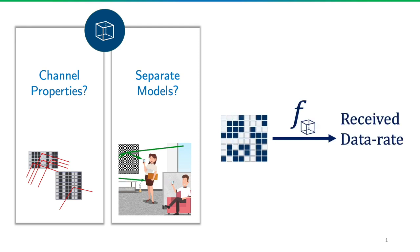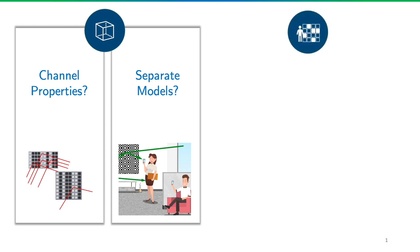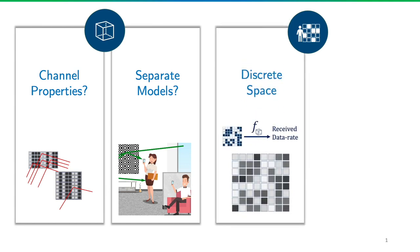Once the channel is estimated, we have a mapping from a configuration to a data rate. For configuration search, the combination of all possibilities is effectively infinite. So, the challenge is that the IRS configuration is in discrete space. Therefore, defining optimization objectives, loss functions, and gradients is not straightforward.